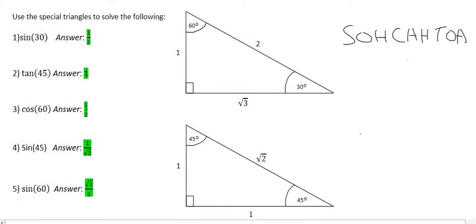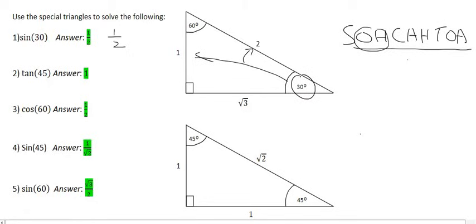In this video we're going to learn how to use the special triangles. The first question asks us to find the sin of 30. We look for the 30 degrees and we know from SOHCAHTOA that sin is the opposite over the hypotenuse, so that's going to give you a half.